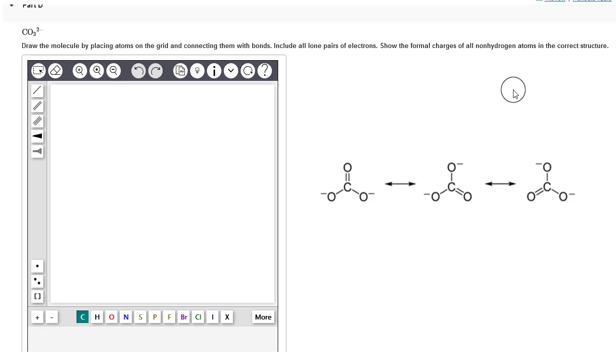We're going to start by adding our central carbon. Carbon is already selected down here on the element selector, so we're just going to click anywhere on the canvas.